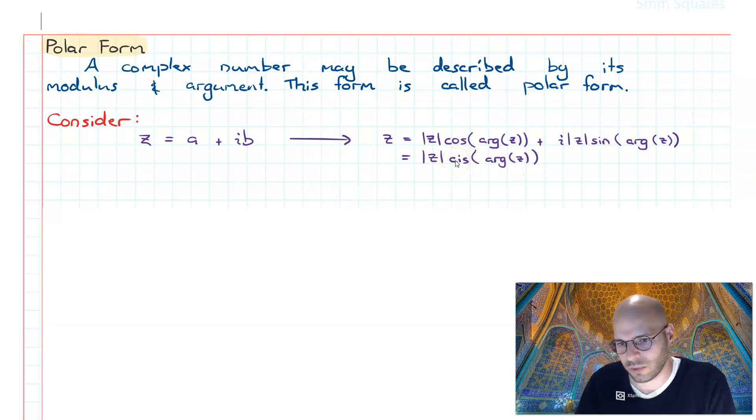And then we can go one better: rather than writing the modulus and the argument, we can write big R cis theta. You don't necessarily have to use R, but we use it in this case. So what we have here is the final representation of polar form.